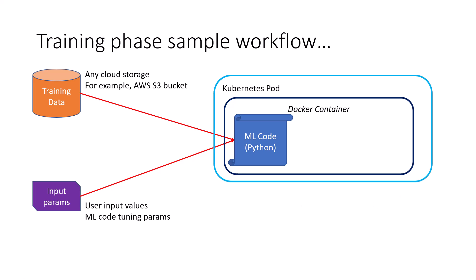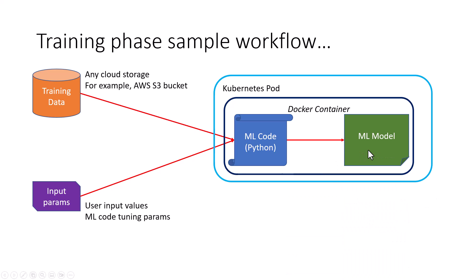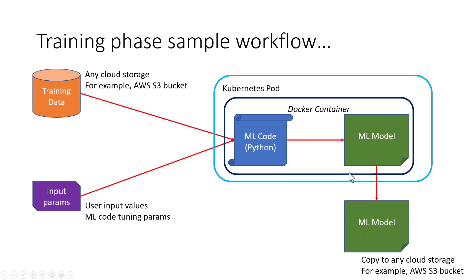Once the execution is complete, the model is created. Once this application runs, a machine learning model is created. You can serialize this model into cloud storage like AWS S3 for the next phase. You copy this trained machine learning model to an AWS S3 bucket, and this can be used for the next phase, which is the serving phase. We are only looking at the training and the serving phase — not at how the model is performing and so on.